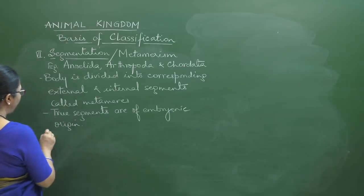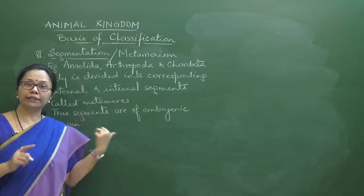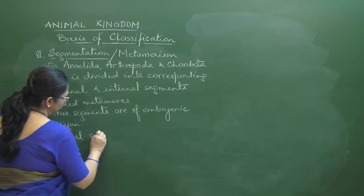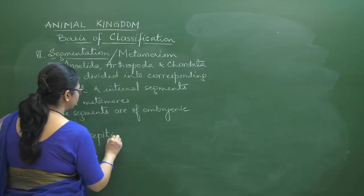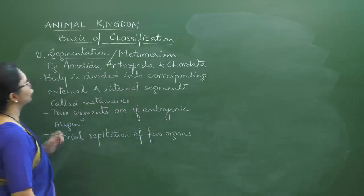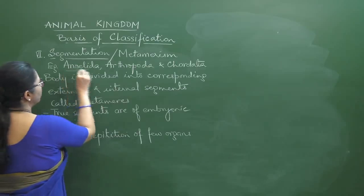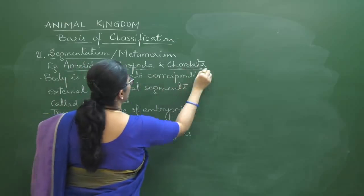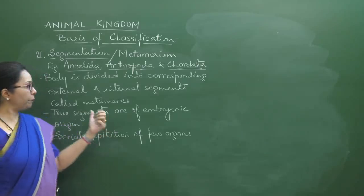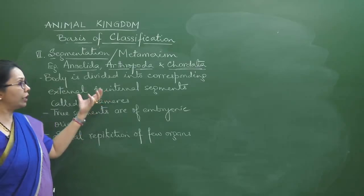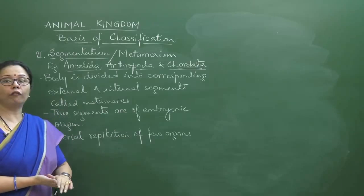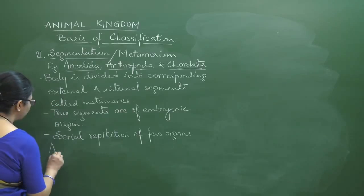Another feature of metamerism is serial repetition of some organs (not all). Contrast this with pseudo-metamerism seen in tapeworms, where new segments called proglottids are continuously added throughout life and are not embryonic in origin — this is false segmentation.